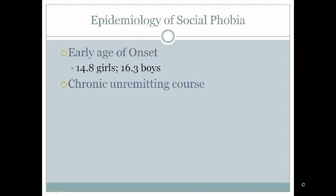Social phobia typically has an early onset at about age 14 for girls and 16 for boys. Once it develops, it has a chronic and unremitting course until people seek treatment. This isn't just disliking public speaking — it's to the point where it's interfering in daily life. Someone who does not meet the interference criteria can still seek treatment; you don't necessarily need to have the diagnosis.